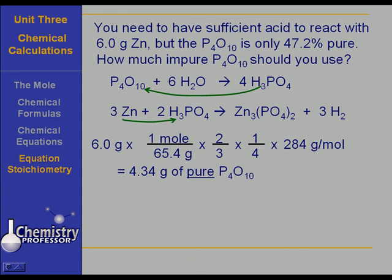But our source is only 47.2 percent pure. So how do we find out how much of the impure P4O10 we need? I don't know. We need X. So that 47.2 percent of X is 4.34 grams. Do you recall from your math that when you say such and such a percent of something that means multiply?